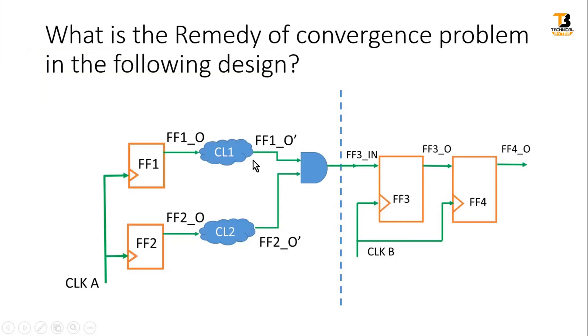Friends, we discussed this design in our previous video in detail. Here the convergent logic is present where multiple combinational logic paths having different propagation delays are converging on a single node. Because of that, glitches are generated at the output of this AND gate and those glitches are getting propagated into clock domain B.